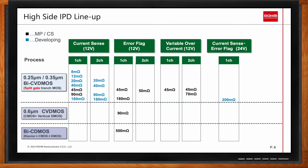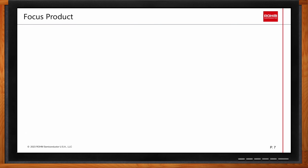For high side IPDs, Rohm offers different sets of functions and different values of on-resistance of the integrated switch as well. High side IPDs include unique functions such as variable overcurrent setting to accommodate different types of loads. Let me highlight one specific IPD product from Rohm's portfolio: it is a high side IPD with adjustable overcurrent limit and adjustable mask time.